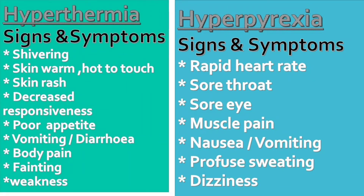Let us move to the signs and symptoms of hyperthermia and hyperpyrexia. There are some common signs and symptoms like muscle pain, vomiting, and weakness. Different signs and symptoms for hyperthermia include shivering, hot skin, skin rash, decreased responsiveness, poor appetite, body pain, fainting, and weakness. Different hyperpyrexia signs and symptoms include rapid heart rate, sore throat, sore eye, nausea, profuse sweating, and dizziness.